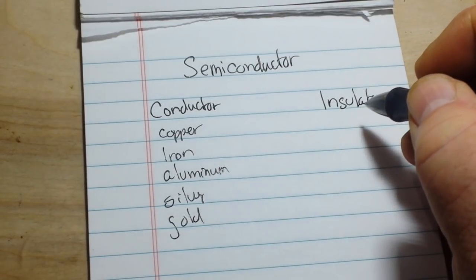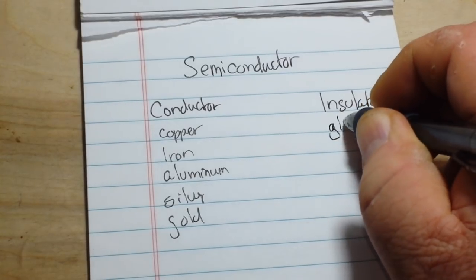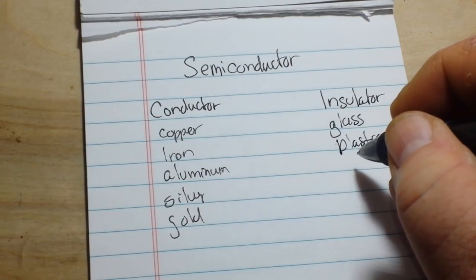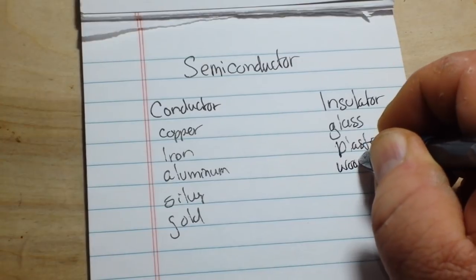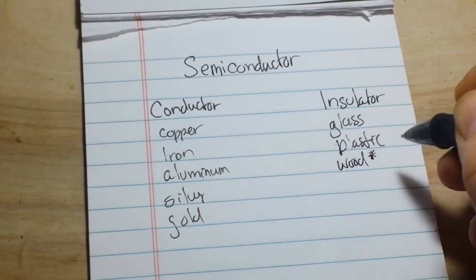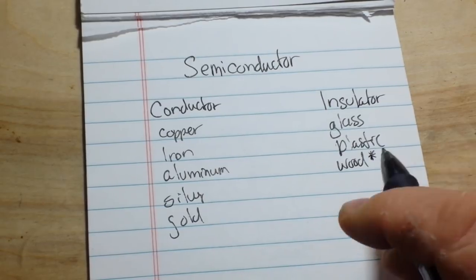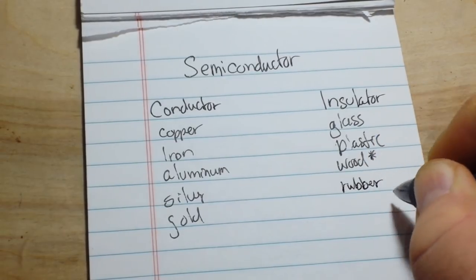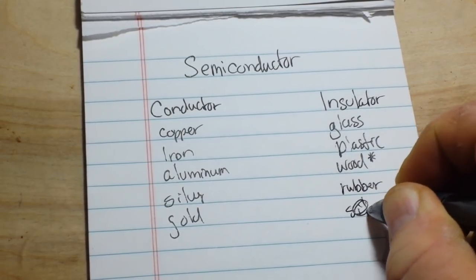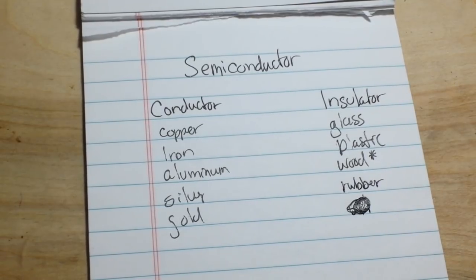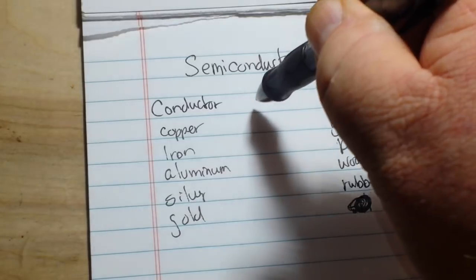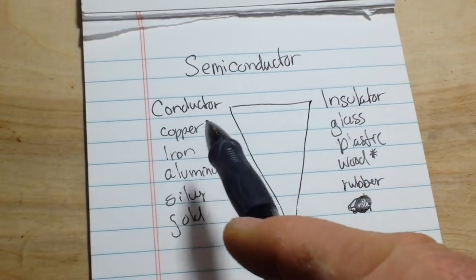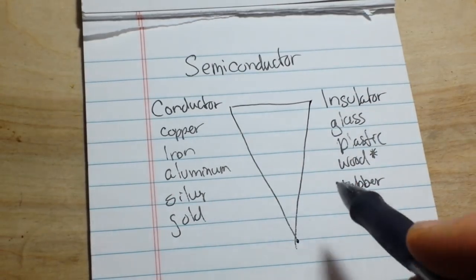Insulators, things that do not conduct a current. Glass, plastic, wood to some extent. We'll put an asterisk up there because the moisture content in wood can change things, but you get the idea. Rubber. So we have conductors, we have insulators. Conductors conduct current, insulators insulate. They do not conduct.